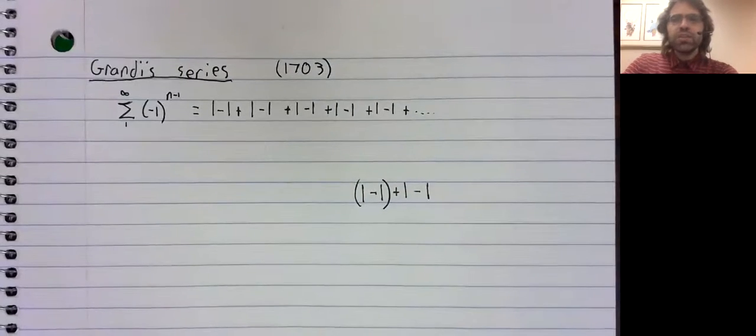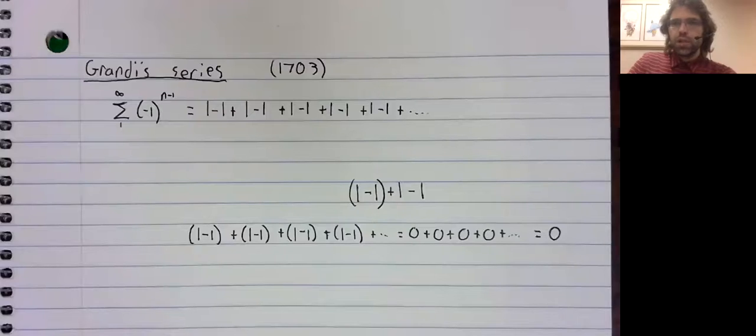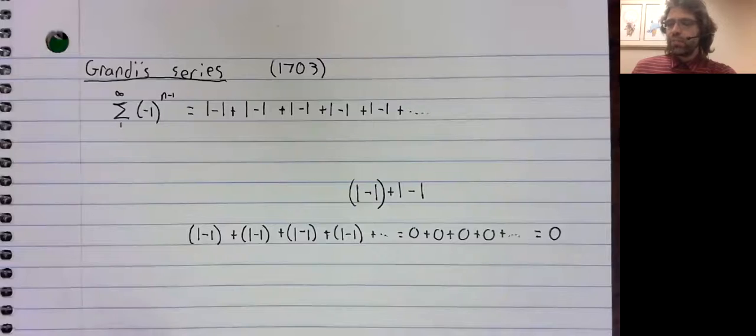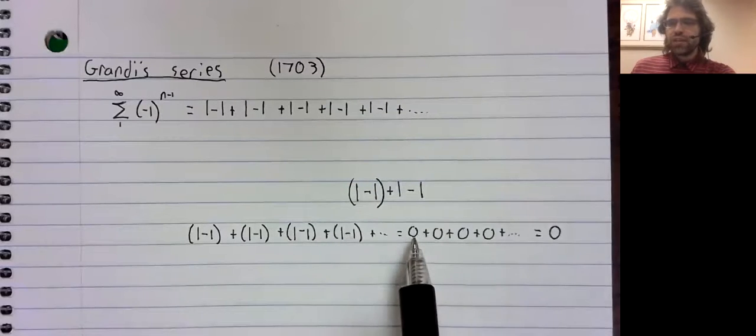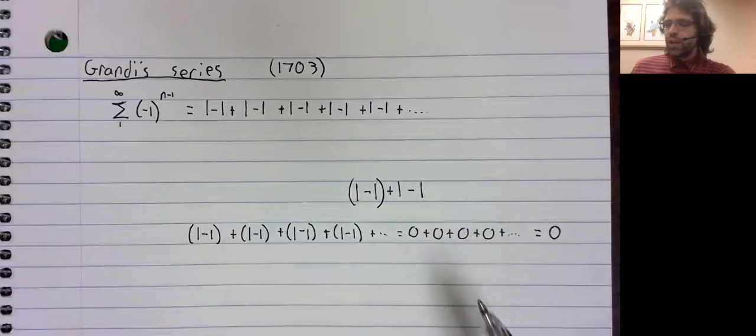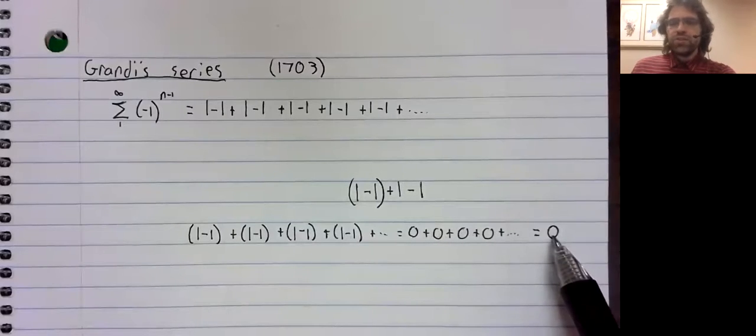Let's put in some parentheses strategically. All of these terms cancel and turn to zero. This sum is zero. So Grandi's series seems like it should equal zero.